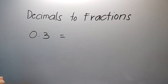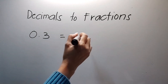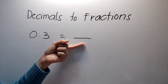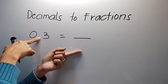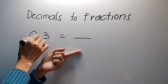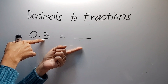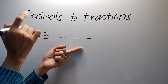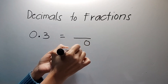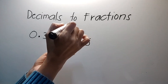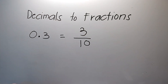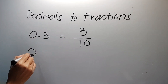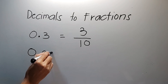Like for example, ito — 3 tenths. Madali lang yan. Sa denominator natin, yung nandito sa baba ng fraction, dahil after ng decimal point meron kang isang place, so that's one zero. Dagdag ka ng one, so copy — and then you'll have three tenths.